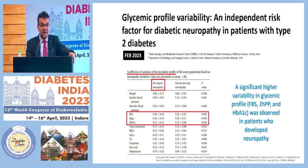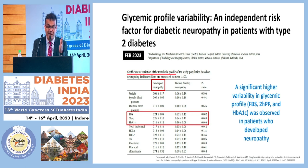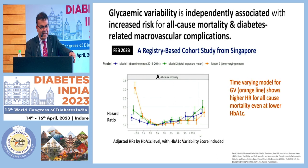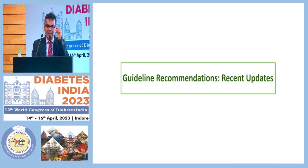Glycemic variability is an independent risk factor for diabetic neuropathy. A significantly higher variability in the glycemic profile — that is, fasting and post-meal glucose levels, where fasting is normal but post-meal glucose is very high — was observed in patients who had more diabetic neuropathy. Glycemic variability is also independently associated with increased risk of all-cause mortality and macrovascular complications, not only microvascular complications.